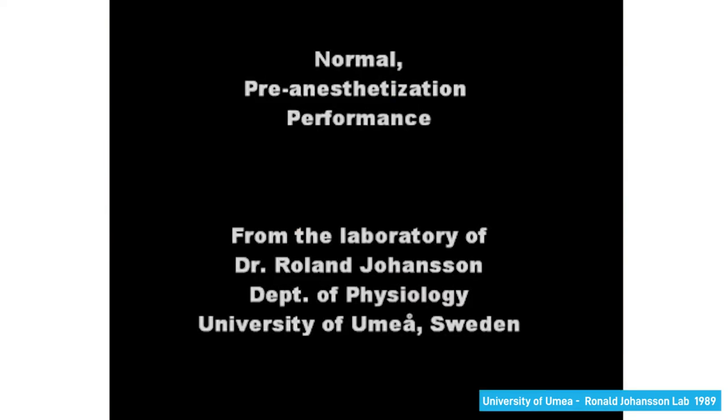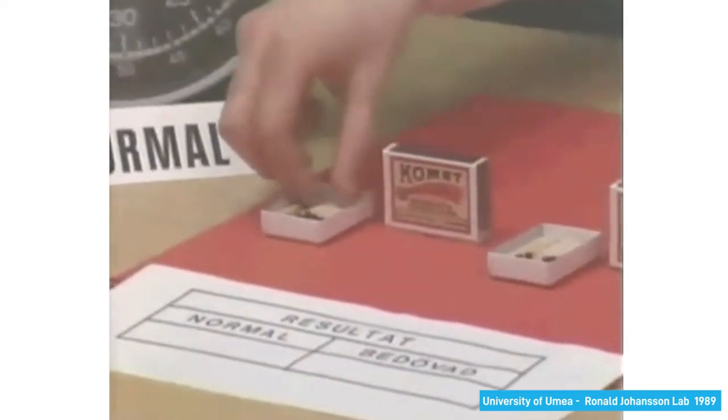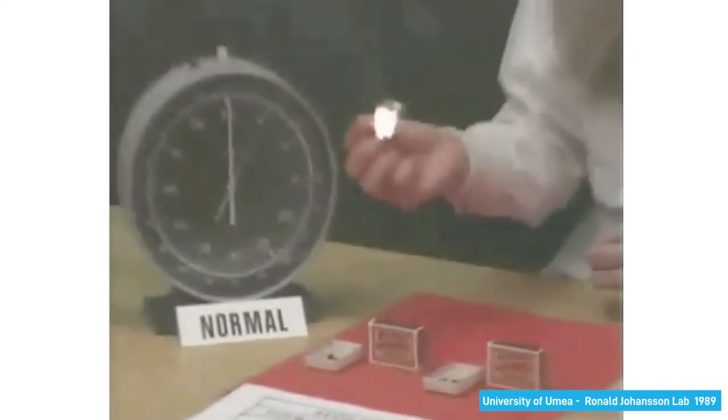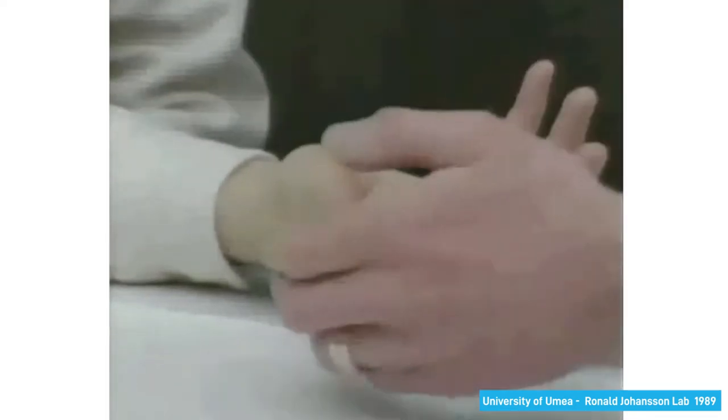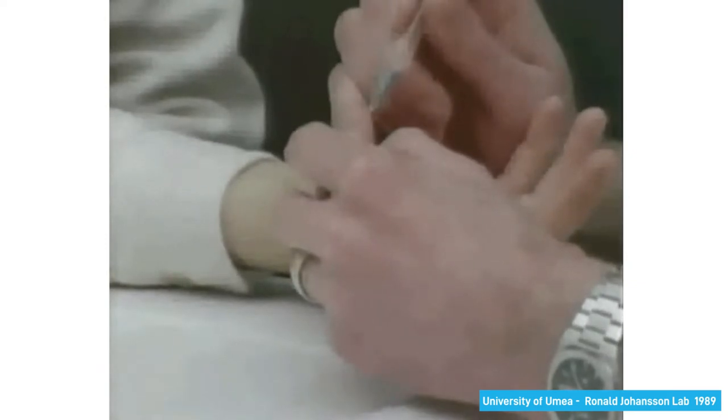This video is from an experiment in 1988 at the University of Umeå in Sweden in which participants were asked to light a match. As you can see in the video, the participants could do the task quickly in normal conditions. In the second part of the experiment, the thumb, index, and middle finger of the participants were anesthetized.